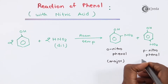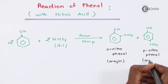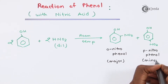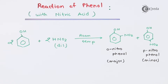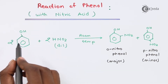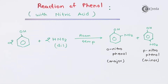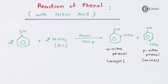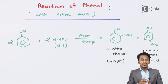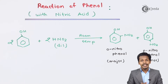The para-nitrophenol is the minor product — the quantity of para-nitrophenol obtained when phenol reacts with dilute nitric acid is less. This is how the reaction proceeds and how we get these products. Now let's look at what happens when we use concentrated HNO3 reacting with phenol.